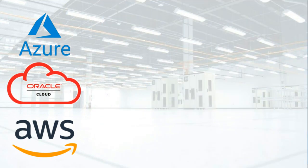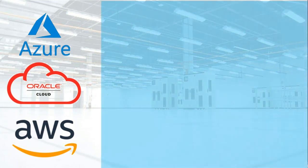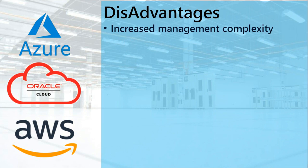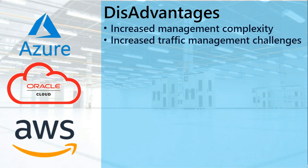What are the disadvantages? There is increased management complexity — more clouds, more management. Each has its own management consoles and schema. You need to learn them and figure out how to work with them in combination. That also brings increased traffic management challenges — every time a packet moves from one cloud to another, that's a danger zone you have to monitor carefully. We're living in the era of zero trust — nothing is trusted, everything must prove itself.